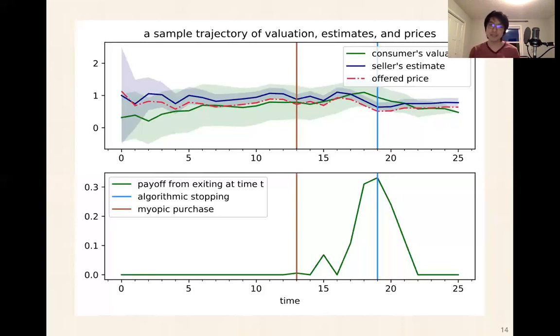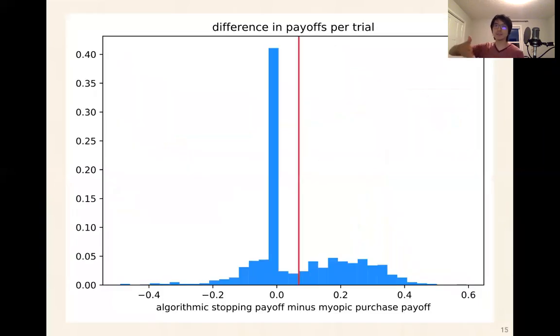Hopefully this gives a sense of what's happening. The myopic purchase basically exits whenever utility is positive, but this algorithmic stopping chooses to gamble when it's smart to and try to get higher payoffs. The consequence is that sometimes the myopic strategy will receive positive payoff, whereas the algorithmic stopping one will receive zero payoff because it was a gamble that didn't pay off. They waited and then the payoffs weren't good. But in expectation, this is done in a kind of smart way so that the expected payoff increases across sample paths.